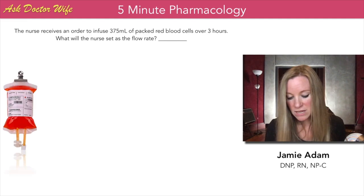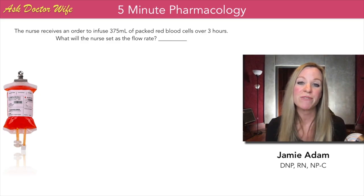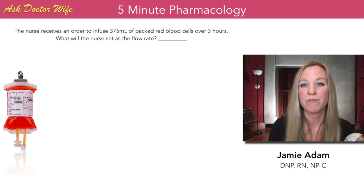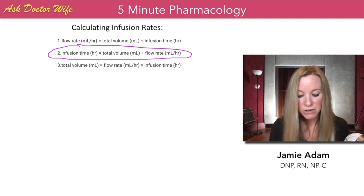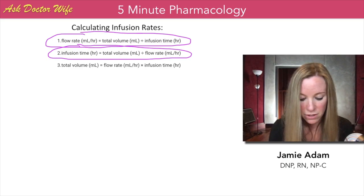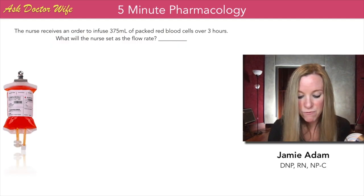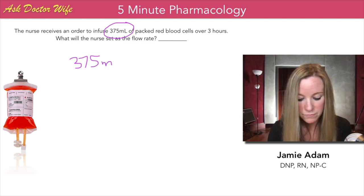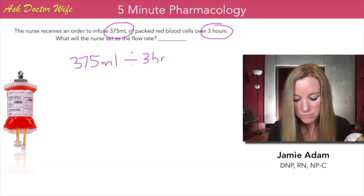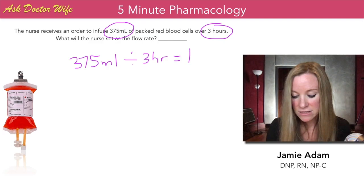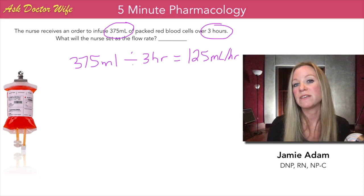For the next question, the nurse receives an order to infuse 375 milliliters of packed red blood cells over three hours. What will the nurse set as the flow rate? Going back to our equation, flow rate equals volume divided by time. We have a volume of 375 milliliters divided by three hours, which gives us 125. So we set the pump to 125 milliliters per hour, delivering the full 375 mL bag of red blood cells over three hours.